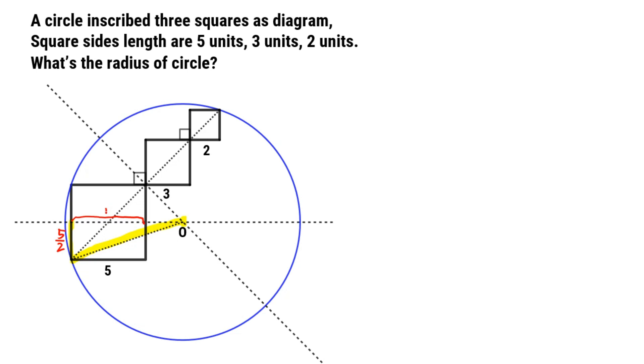This part is 5. This angle is 45 degrees. So this part also equals 5 over 2. This is a right triangle. So we can calculate the radius by Pythagorean theorem.